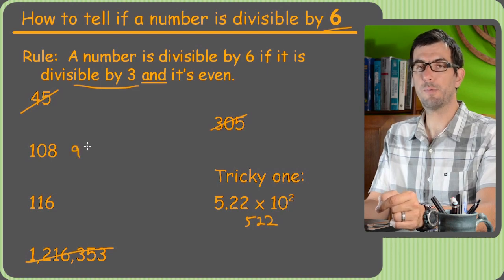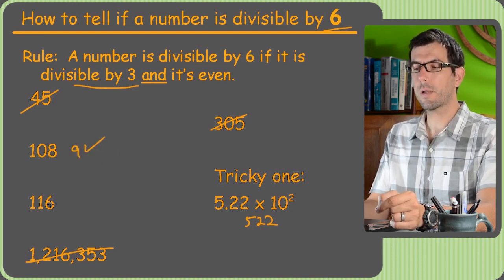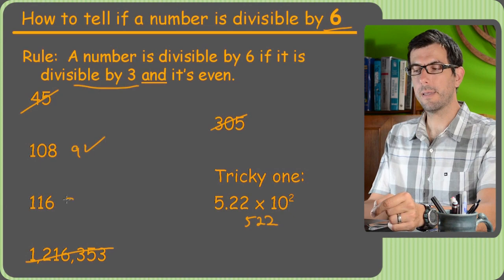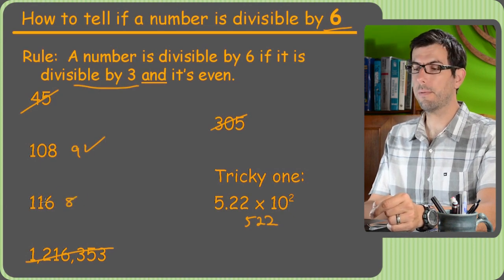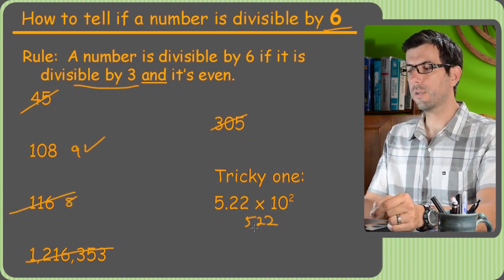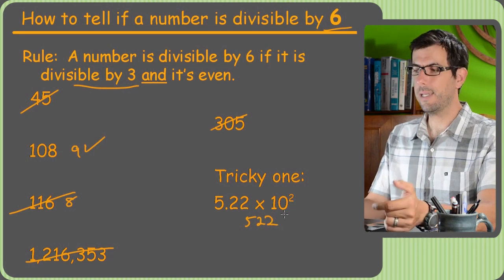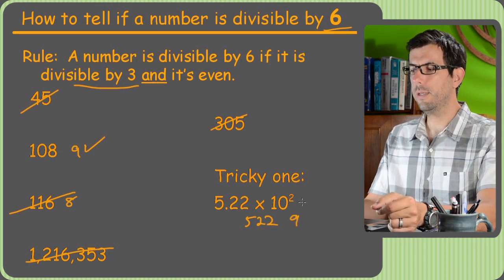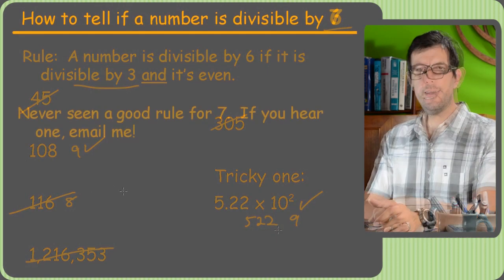1 plus 0 plus 8 is 9, and 9 is divisible by 3, so check mark. 1 plus 1 plus 6 is 8. 8 is not divisible by 3. And then, of course, 522 adds up to 9. And sure enough, that one is divisible by 6.